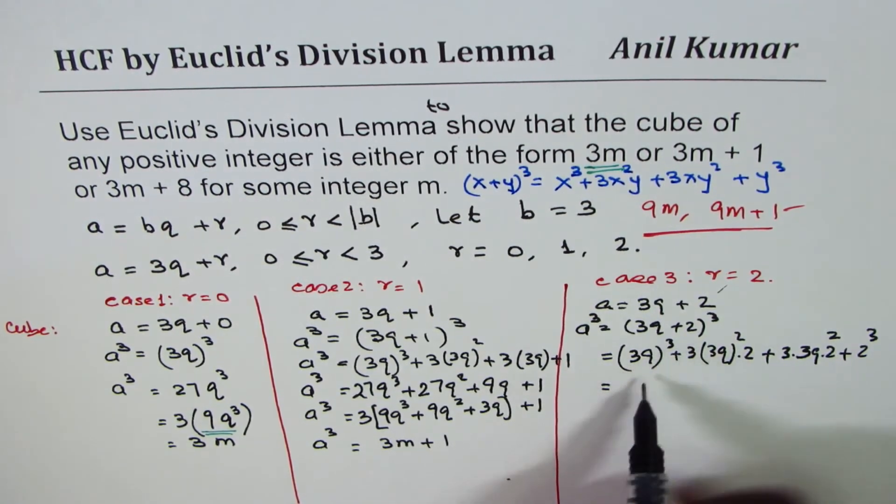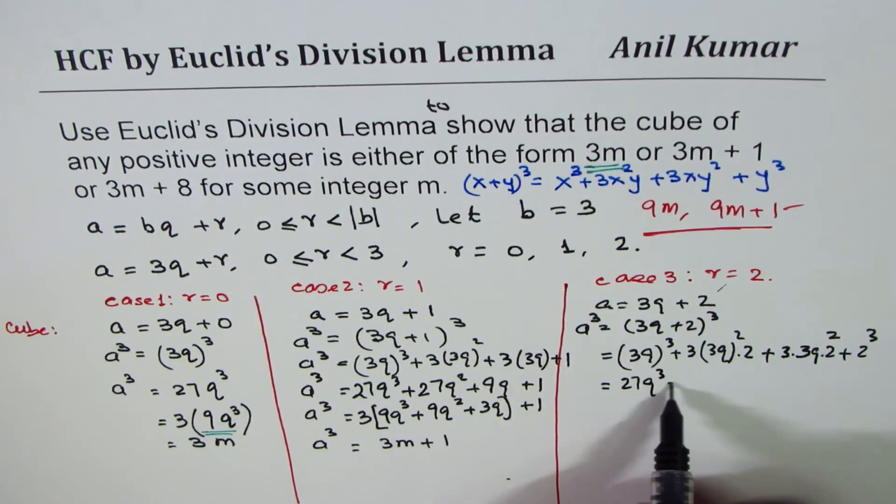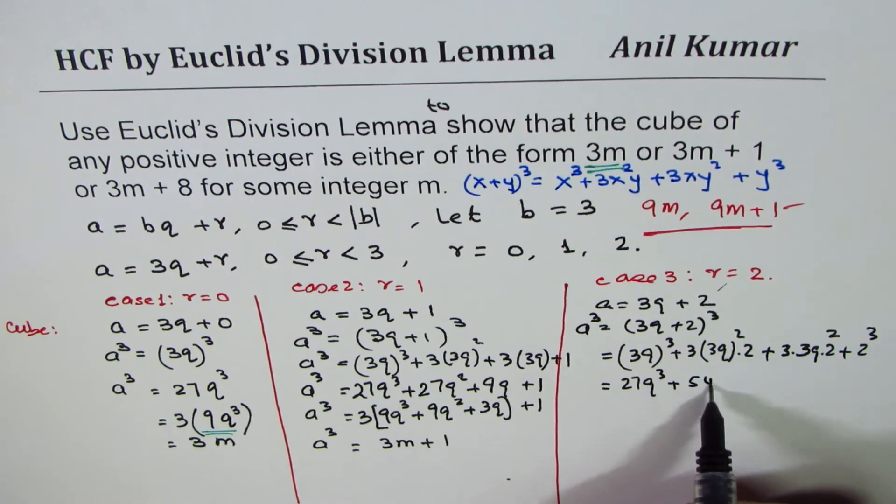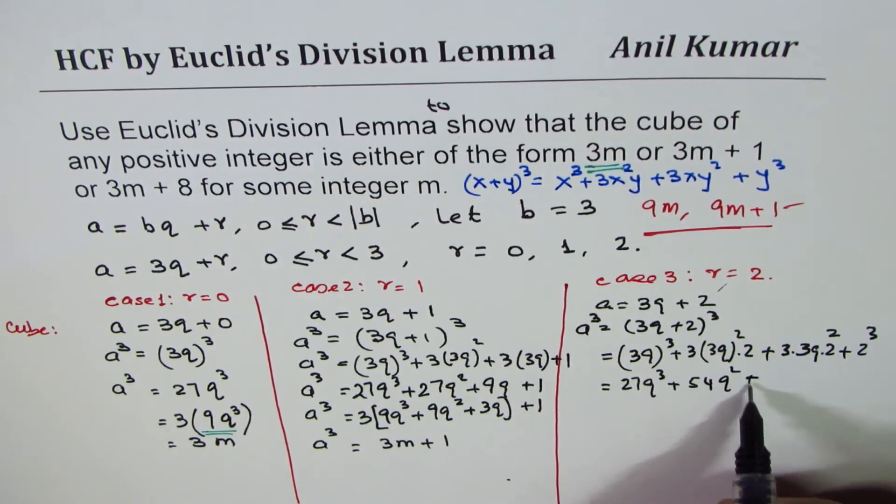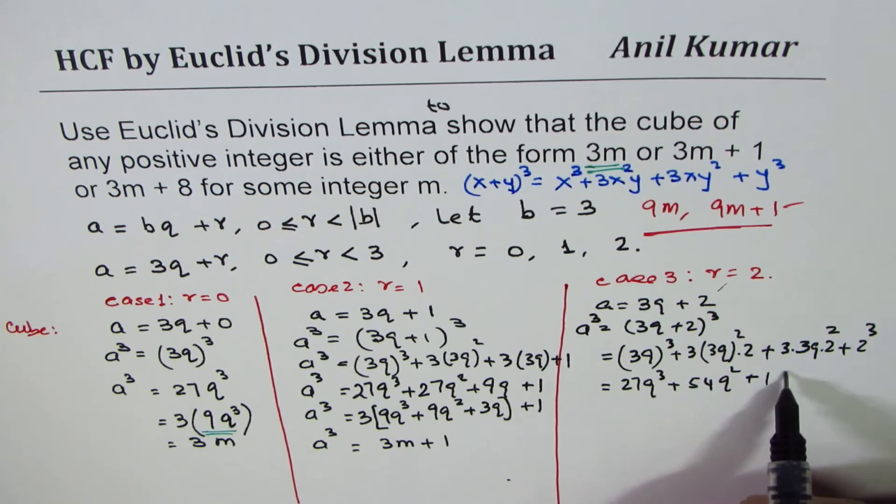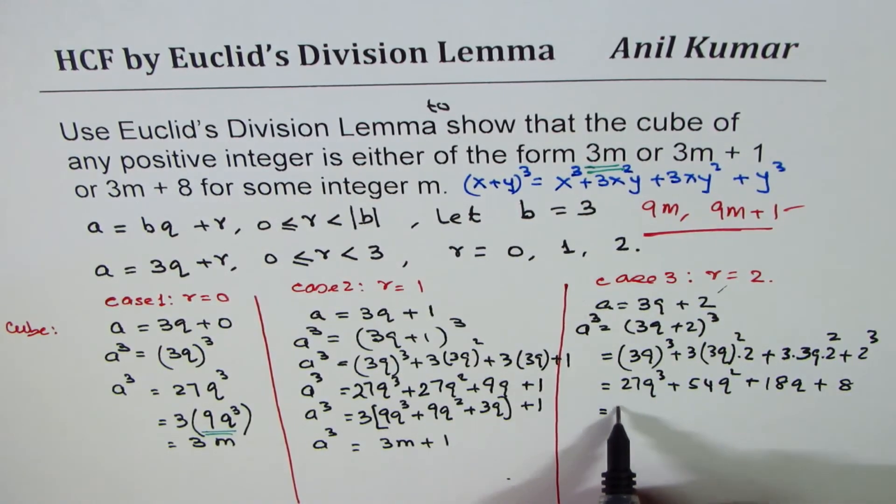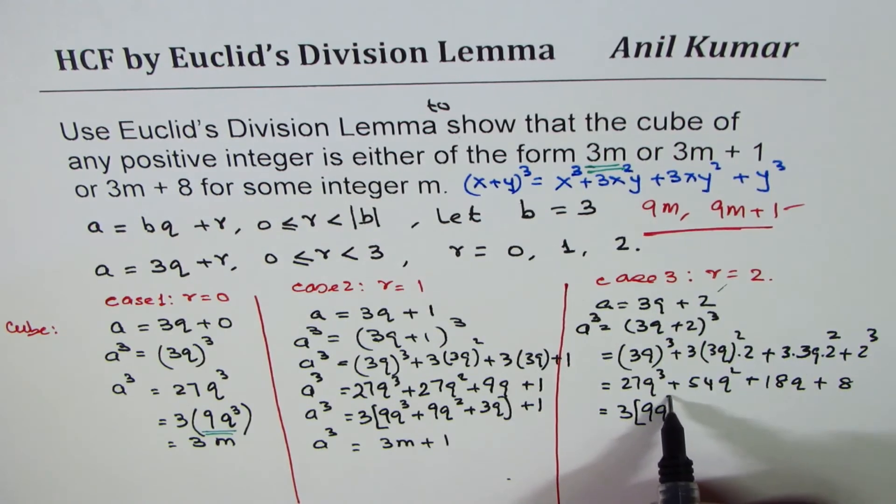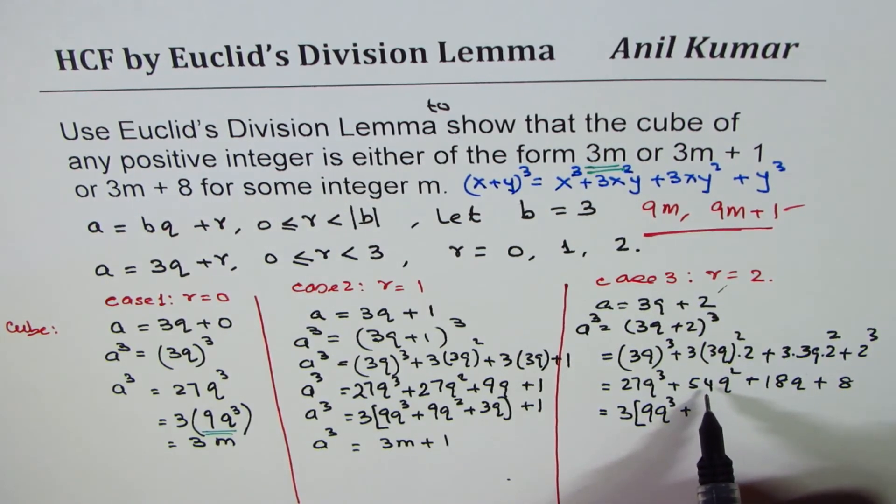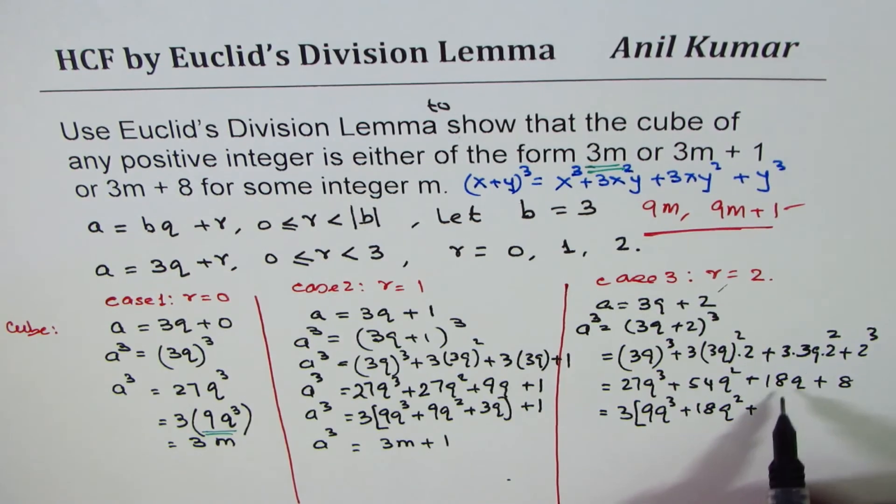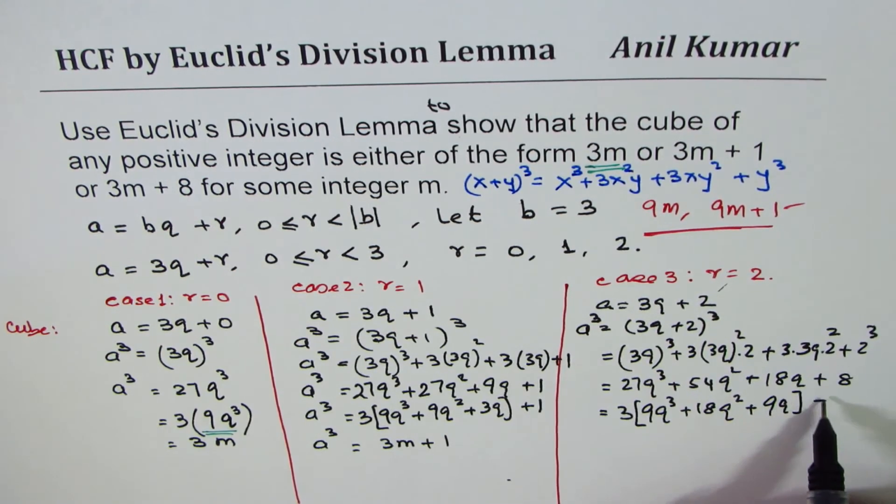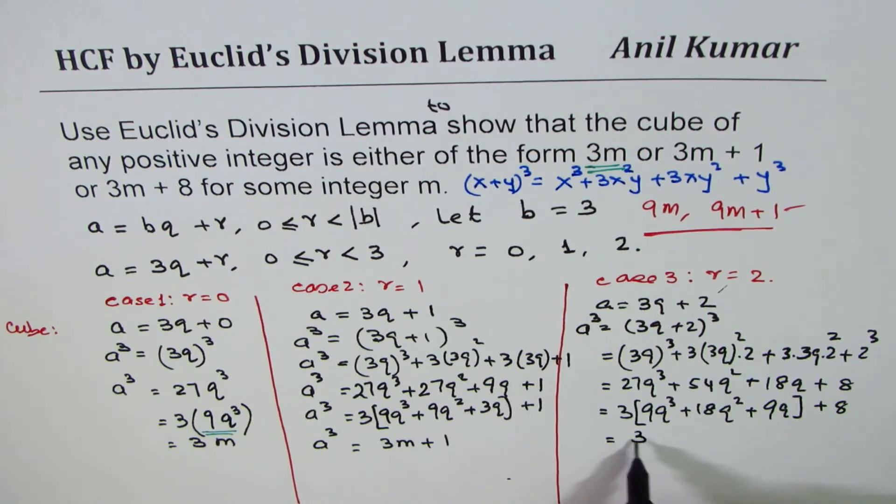Now we'll write this as 27Q cube plus 2 times 27 which is 54Q square, plus 9 times 2 is 18Q plus 8. We can always take 3 common as we did earlier. 9Q cube plus dividing by 3 we get, 54 is 3 times 18Q square plus 6Q plus 8.